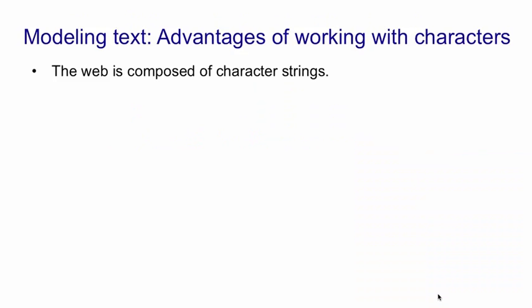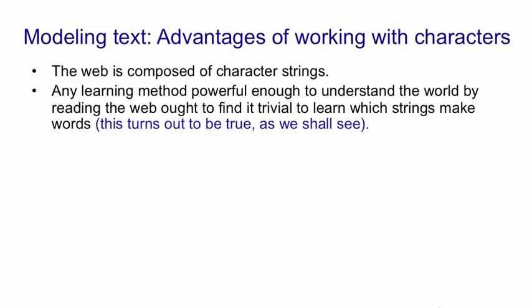I need to start by explaining why we chose to model character strings rather than strings of words, which is what you normally do when you're trying to model language. The web is composed of character strings. Any learning method that's powerful enough to understand what's going on in the world by reading the web ought to find it trivial to learn which strings make words. As we'll see, this turns out to be true.